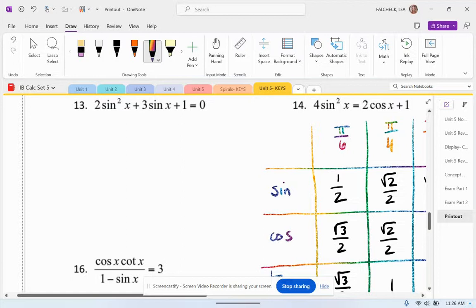Heyo! Number 13. Alright, I've got 2 sine squared x plus 3 sine x plus 1 equals 0. This guy looks quadratic to me. So I am going to let u equal the sine of x.